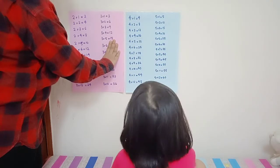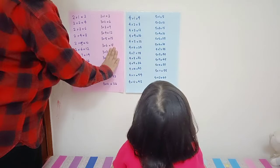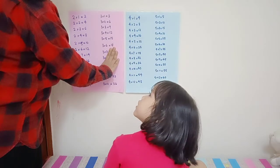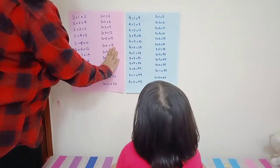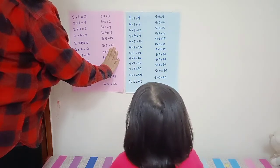Three times six... eighteen. Three times seven... three times six equals eighteen. Three times seven... thirty-one? Thirty-one? Three times eight...